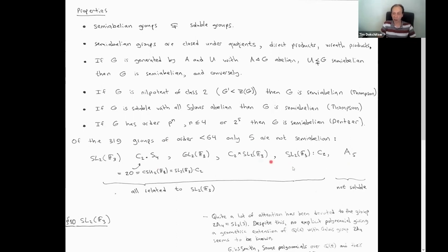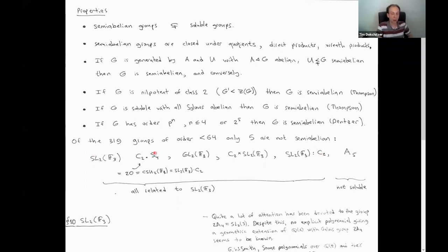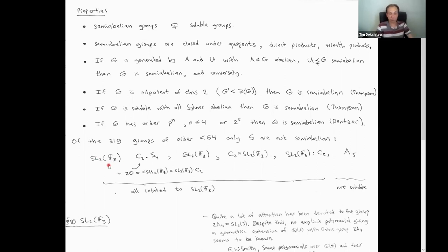The other groups that are not semi-abelian — one of order 24 and four of order 48 — are closely related to SL2(F3). They all contain SL2(F3) as a subquotient. In some sense this is the smallest example for which this technology fails: it's the smallest example of a group which you cannot prove is regular over Q(T) by this construction. You can take wreath products of cyclic groups, take quotients, take direct products, and all these constructions will never give you SL2(F3). And A5 we know how to construct anyway using Hilbert.